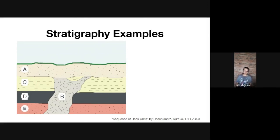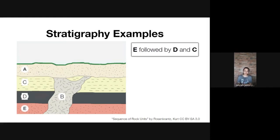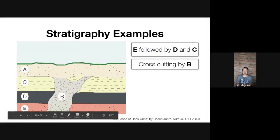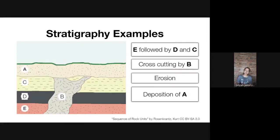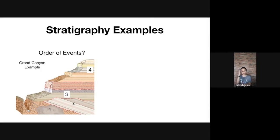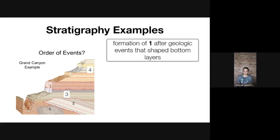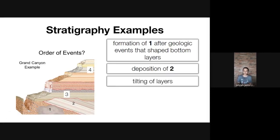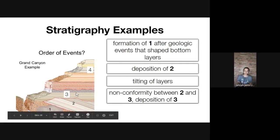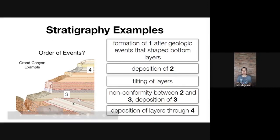Here are stratigraphy examples to work through. For the first diagram, the formation sequence is: E formed first, then D, then C, then B — which also involves a cross-cutting episode — followed by erosion, and finally deposition of layer A. For the second diagram: layer 1 formed first, then layer 2 was deposited with an angular unconformity, followed by a non-conformity between layers 2 and 3, then deposition of layer 3, and finally deposition of layer 4.